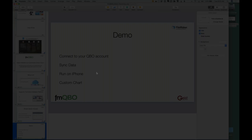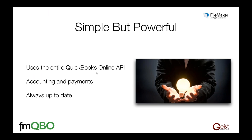That's it for the demo. Let's wrap up a little about FMQBO. It's simple, but also extremely powerful. You can use the starter solution to get going right away, but it does use the entire QuickBooks Online API, which means anything that Intuit makes available, you can do with FMQBO — all the accounting stuff and even payments including credit card processing. Another nice thing: when QuickBooks releases new API features, you automatically get the ability to interact with that functionality. For example, about four months ago the QuickBooks API was updated to include deposits — and when that kind of thing happens, you won't need to wait; you'll be able to use that functionality right away with FMQBO.